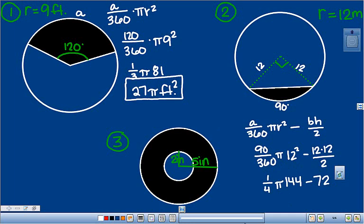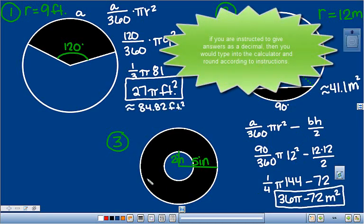So I have 36 pi minus 72. Now if they tell you to leave it in terms of pi, this is as far as you can go. You can't do 36 minus 72 because 36 has this pi here. It's kind of like a variable. You can't combine it because they both don't have the pi. So you would say 36 pi minus 72, and this is meters, so area is meters squared.